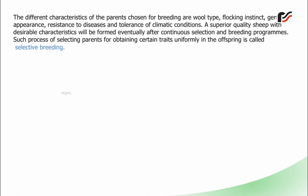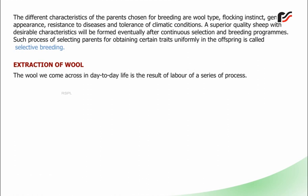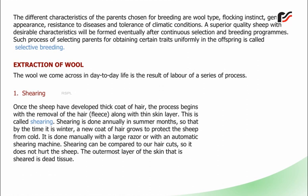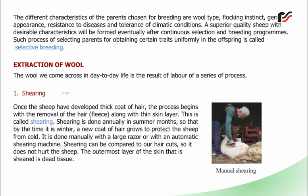The wool we come across in day-to-day life is the result of a series of processes. First is shearing: once a sheep has developed a thick coat of hair, the process begins with the removal of the hair fleece along with a thin skin layer. This is called shearing. Shearing is done annually in summer months so that by the time it is winter, a new coat of hair grows to protect the sheep from cold. It is done manually with a large razor or with an automatic shearing machine. Shearing can be compared to our haircuts, so it does not hurt the sheep. The outermost layer of the skin that is sheared is dead tissue.